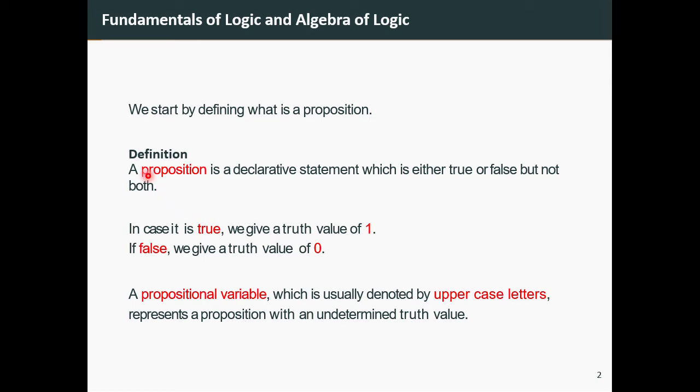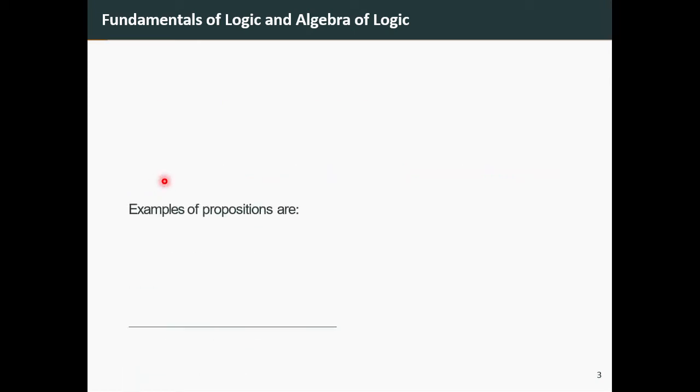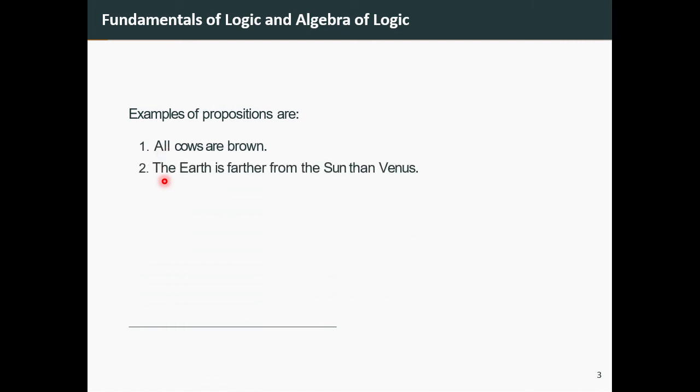Now let's take a look at some examples of propositions. Number one: All cows are brown. Number two: The Earth is farther from the Sun than Venus.